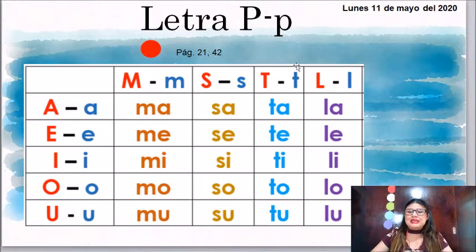La siguiente letra que hemos visto es la letra T. ¿Recuerdas cómo suena la T? Y sus sílabas son TA, TE, TI, TO, TU.